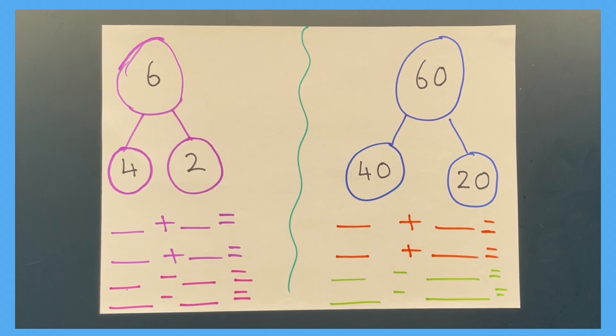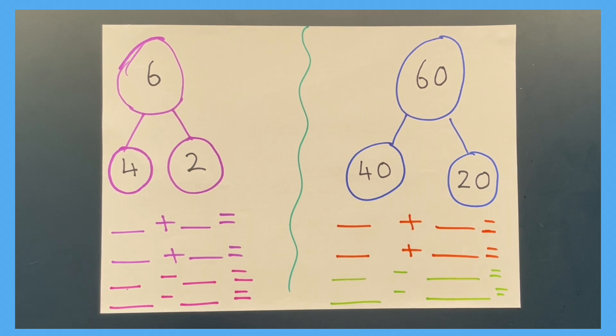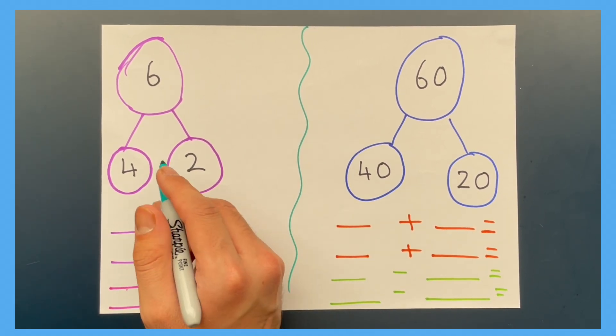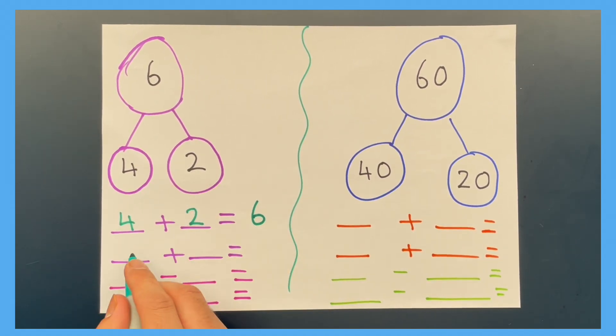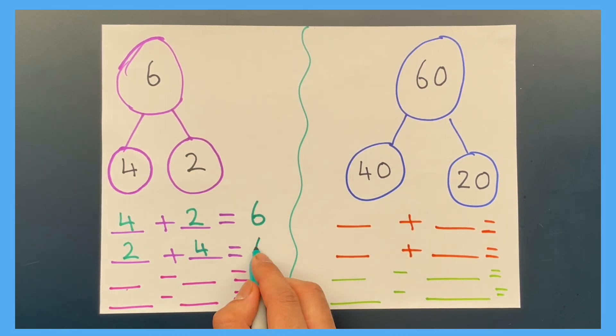Have a go at answering these questions. For the first question, the answer is four add two equals six. Then we have two add four equals six. Using the whole number, which is six, take away four equals two. Now six again, take away two equals four.